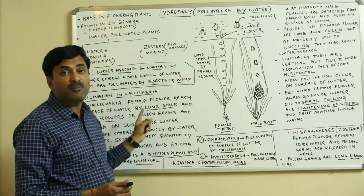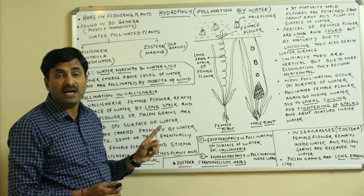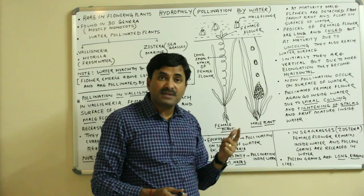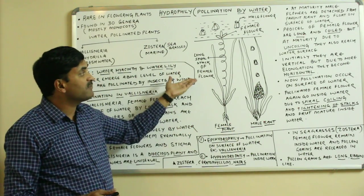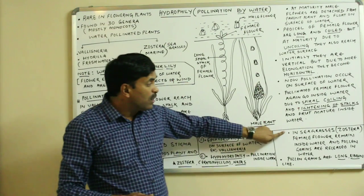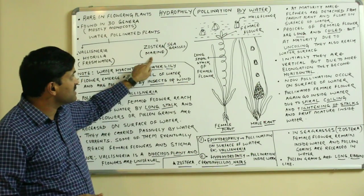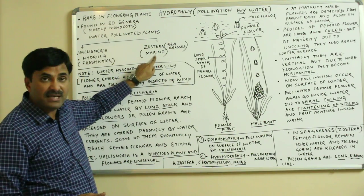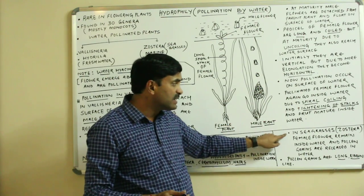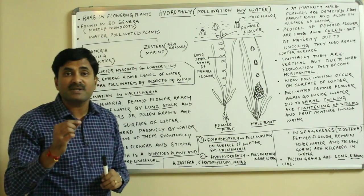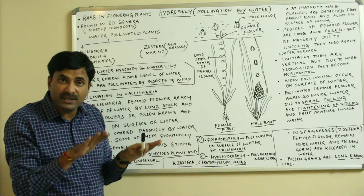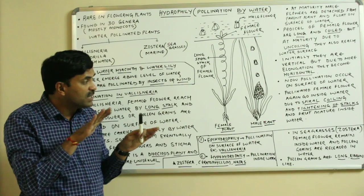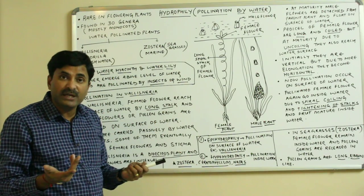This is the mode of pollination in Vallisneria. Now it is not necessary that all plants show pollination in this manner. In sea grasses, for example in Zostera, which is a marine sea grass, the female flowers remain inside the water and pollination also occurs inside the water — this is hypo-hydrophily type.